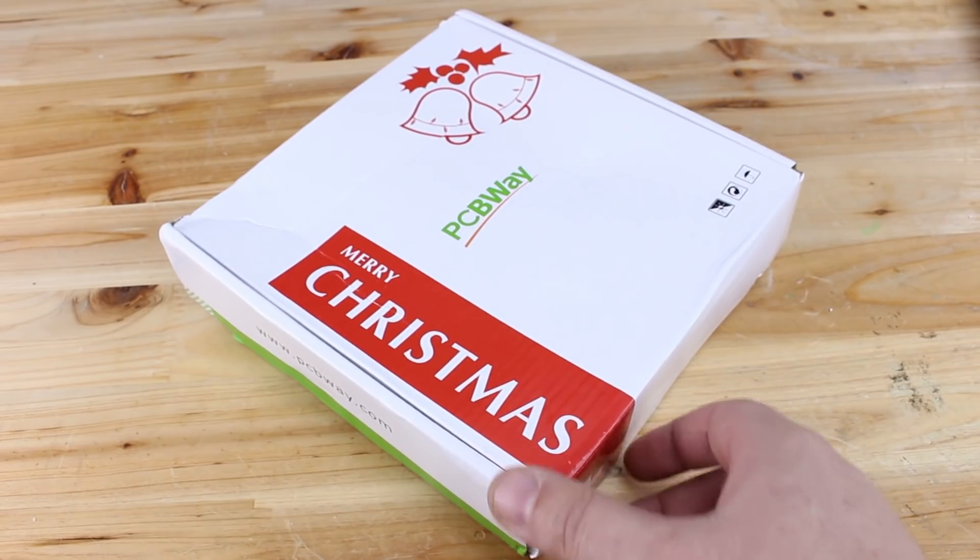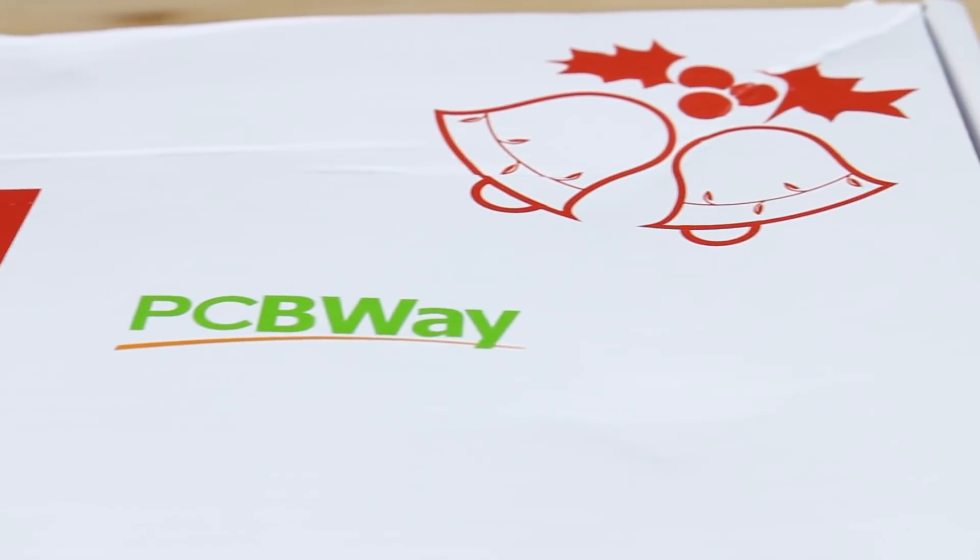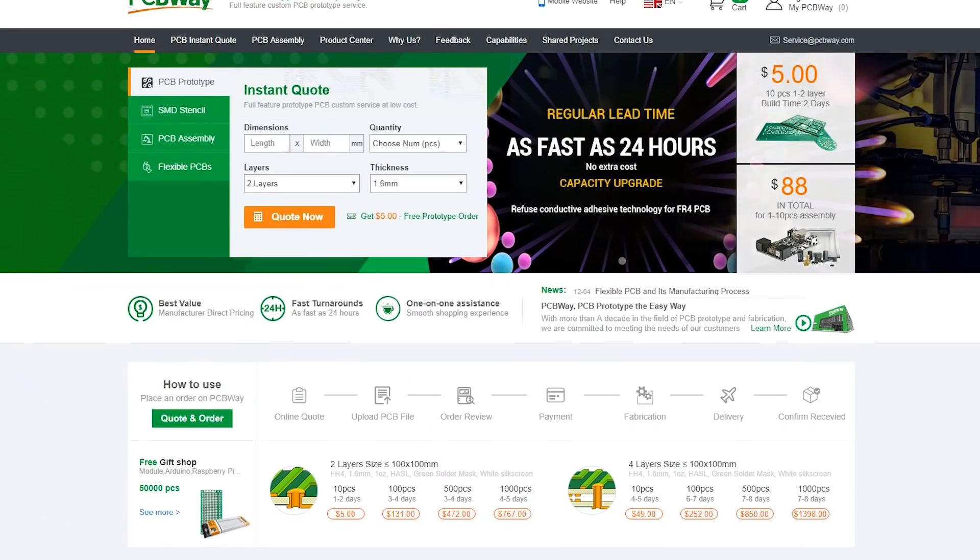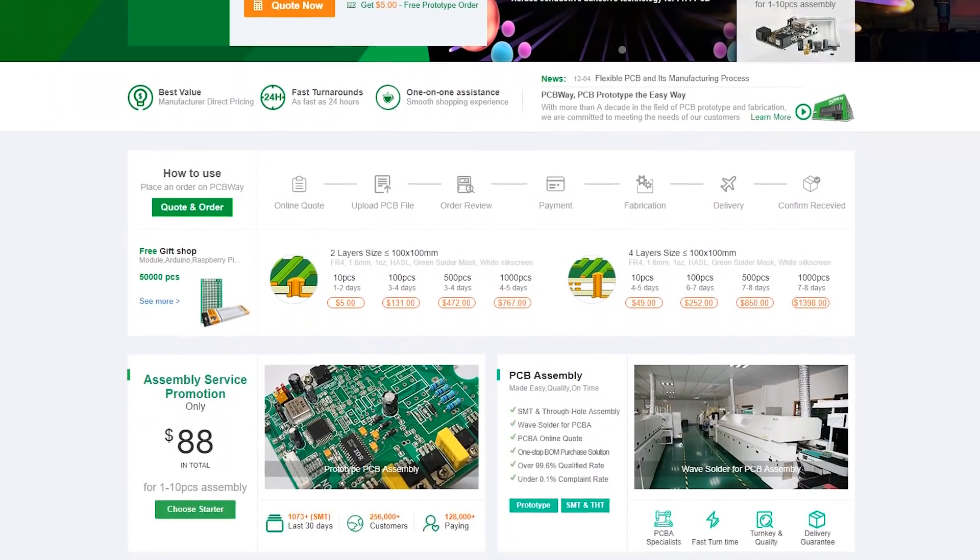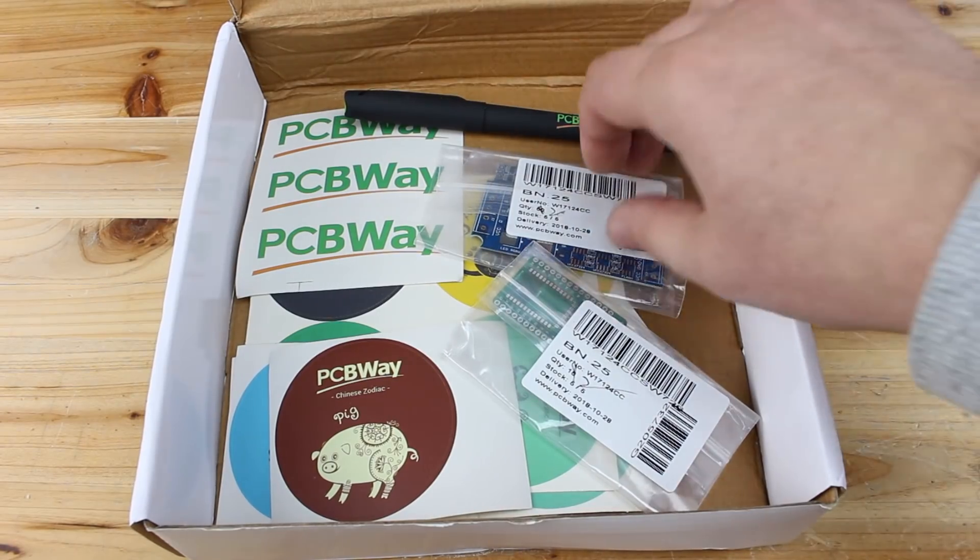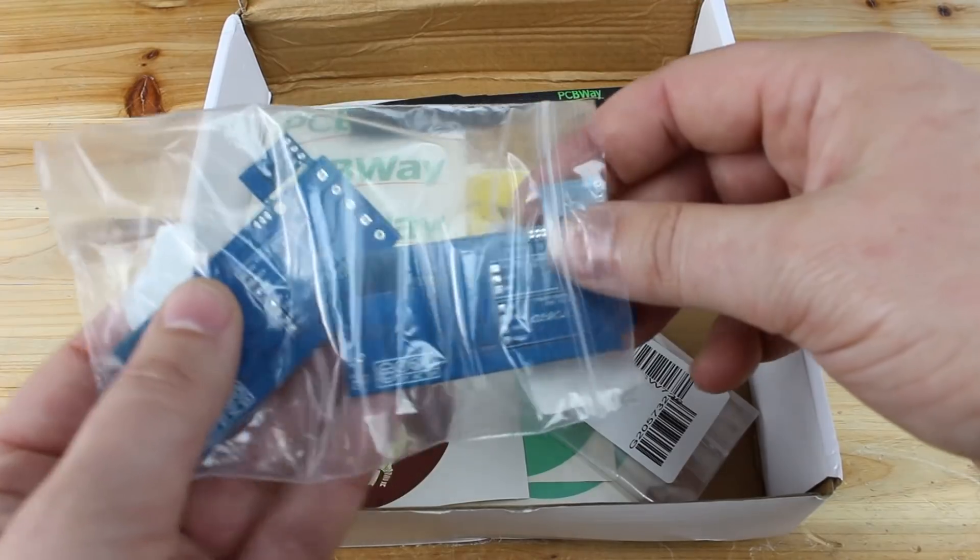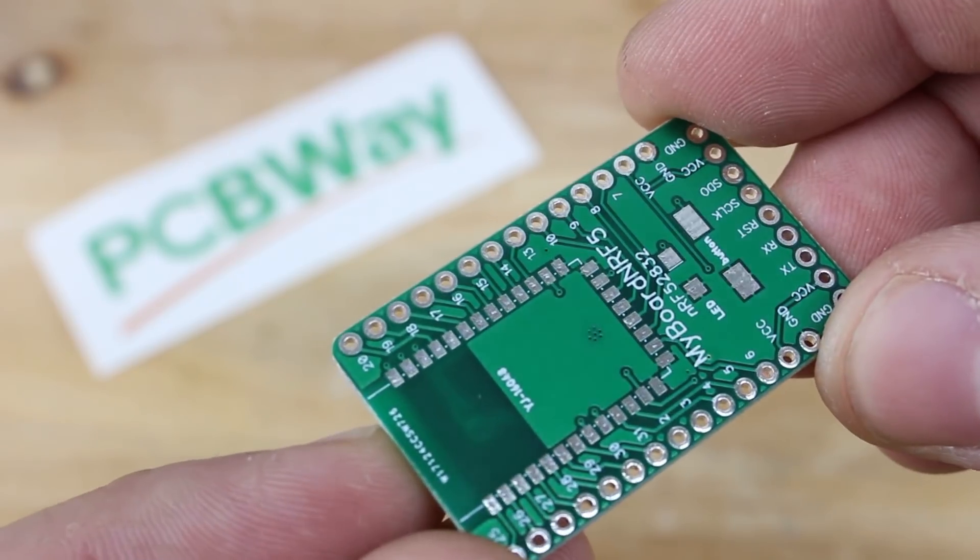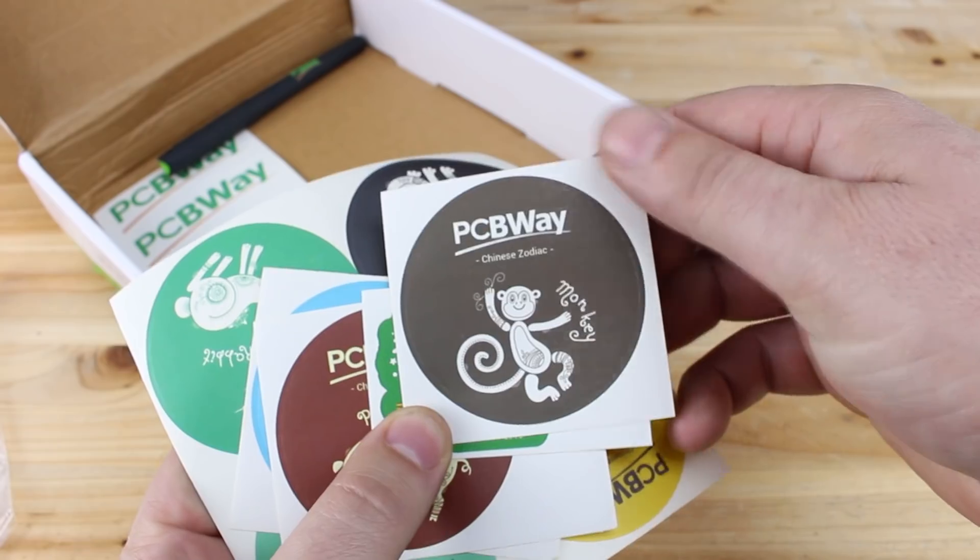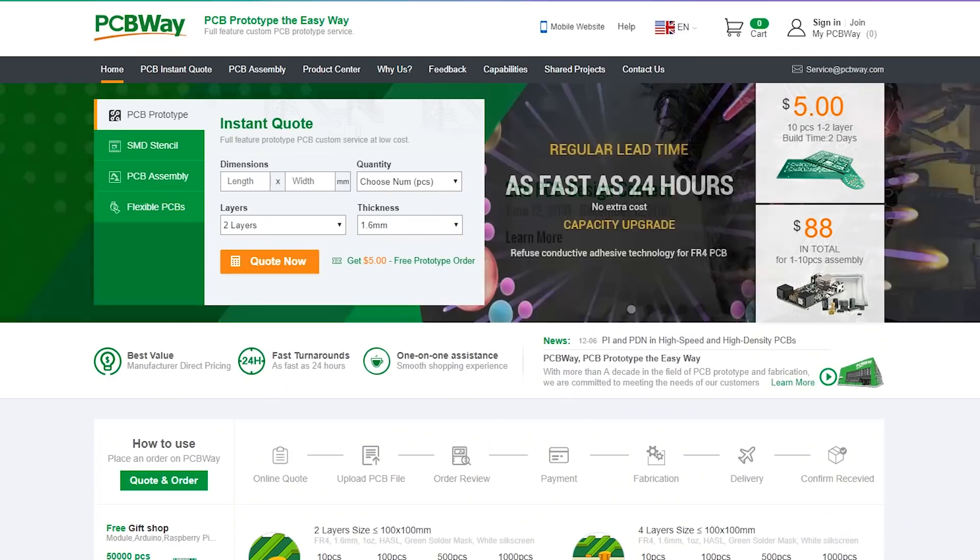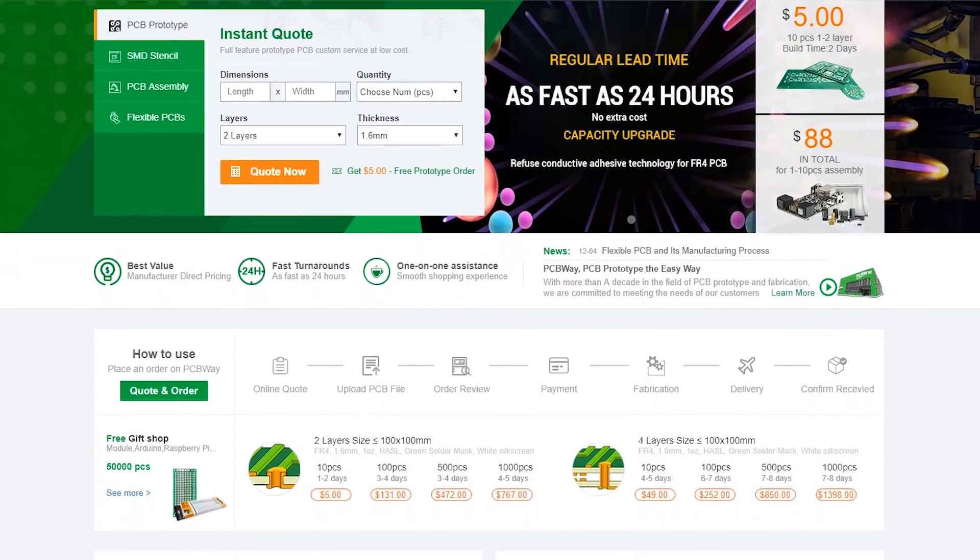Before we start, sponsor of this video is PCBWay, PCB prototype the easy way. You can design your custom made PCBs and order from PCBWay website. In very fast time, you will receive your package with your prototype boards with superb quality and the guys from PCBWay are super cool. Beside your boards you will get a bunch of stickers and PCB design marker pen, which is awesome. Visit the link below and make your first order with PCBWay.